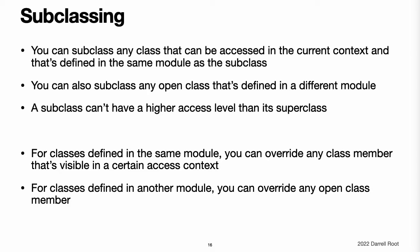Subclassing. You can subclass any class that can be accessed in the current access context and that is defined in the same module as the subclass. You can also subclass any open class that is defined in a different module. A subclass cannot have a higher access level than its superclass. For example, you cannot write a public subclass of an internal superclass. In addition, for classes that are defined in the same module, you can override any class member — method, property, initializer, or subscript — that is visible in a certain access context. For classes that are defined in another module, you can override any open class member.